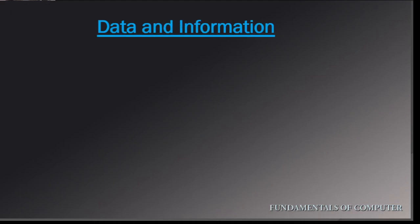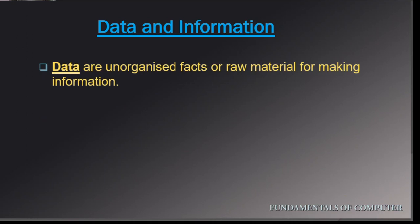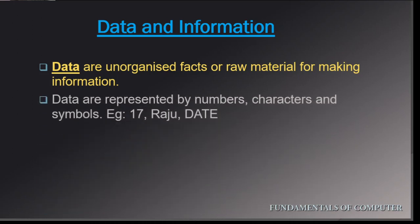Data and information. Data are unorganized facts or raw materials for making information. Data denotes raw facts and figures such as amounts, words, and numbers that can be processed or manipulated. Data are nothing but raw material to produce information. We can produce information only after performing some process upon data. Information is usually represented by numbers, characters, and symbols.